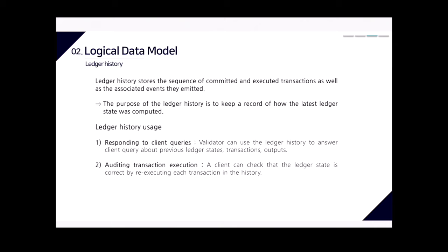The ledger history stores a sequence of committed and executed transactions as well as the associated events they emitted. The purpose of the ledger history is to keep a record of how the latest ledger state was computed. Validators can use the ledger history to answer client queries about previous ledger states, transactions, and outputs.